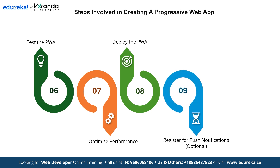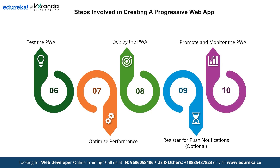Next, we can optionally register for push notifications, enabling real-time communication with users. This feature is particularly useful for engaging users and keeping them informed about updates or events. Finally, we promote and monitor the progressive web app. Promoting the app involves marketing strategies to increase its visibility, while monitoring helps track performance, user patterns and user feedback to make continuous improvements. By following these 10 steps, we can create a progressive web app that is secure, reliable and optimized to provide an outstanding user experience.